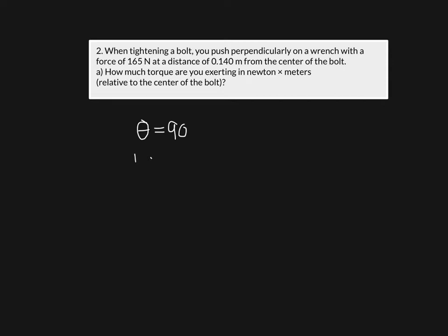We have an angle of 90 degrees when pushing perpendicularly on a wrench with a force of 165 Newtons. We can write down that the force is equal to 165 Newtons. We're applying that force at a distance of 0.14 meters from the center of the bolt, so the radius is equal to 0.14 meters. We're asked how much torque we're exerting in Newton-meters.